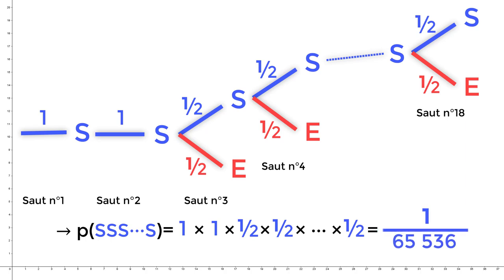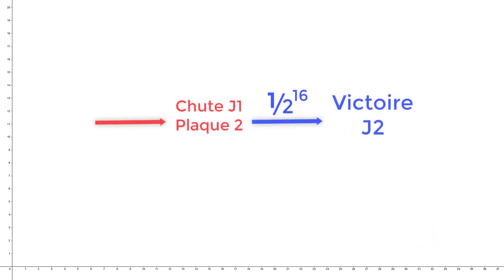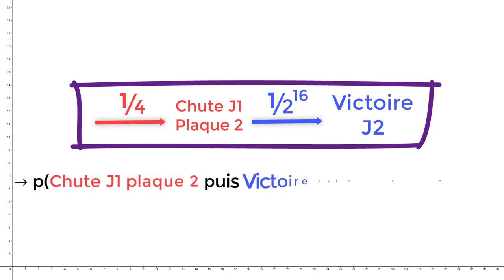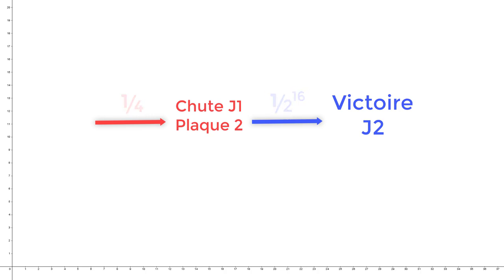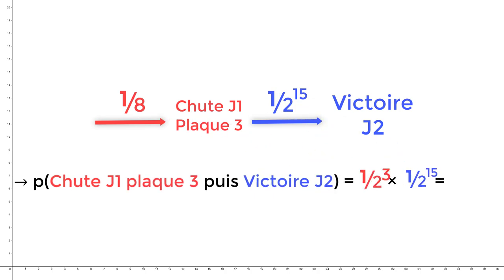C'est mieux que pour le premier joueur, mais ça reste très peu. Cette probabilité de 1 sur 2 puissance 16 n'a lieu que lorsque le joueur numéro 1 tombe à la plaque numéro 2, ce qui n'avait qu'une chance sur 4 de se produire. La probabilité de l'événement, le candidat numéro 1 tombe à la deuxième plaque, puis la candidate numéro 2 franchit le pont, est donc de 1 quart fois 1 demi puissance 16, c'est-à-dire 1 sur 2 puissance 18.